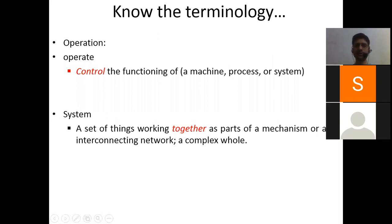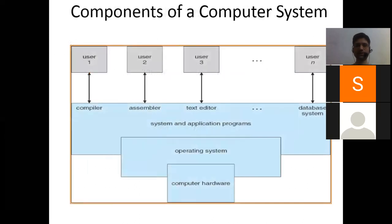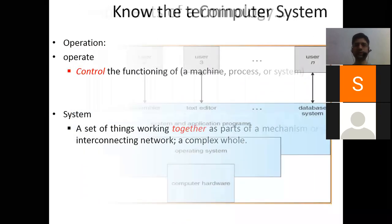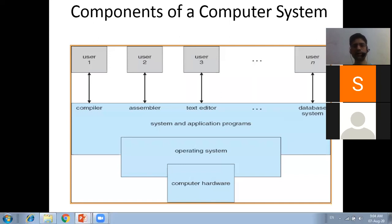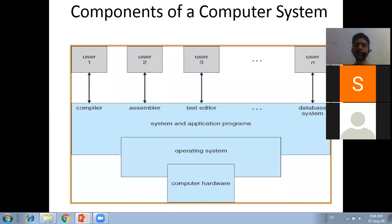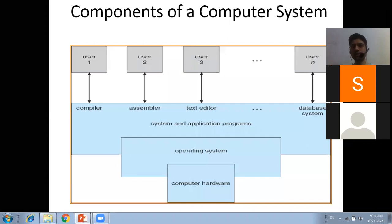Now let's start the actual content and discuss the components of a computer system. We know about hardware and software. There are two types of software: system software and application software - that is, system programs and application programs. System programs, like operating systems, provide the environment to run application programs. Application programs - like PowerPoint, databases, or Zoom - are designed to solve a specific human problem. Drivers are another example of system programs.